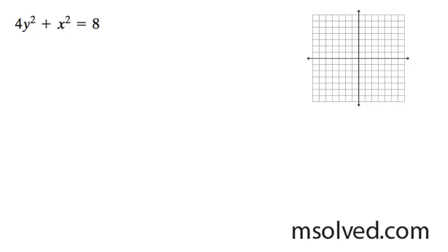I'm going to find the vertices, the foci, and then the major and minor axis of this ellipse. So starting off here, I need to divide through by 8. So I end it with y squared over 2 plus x squared over 8 is equal to 1.